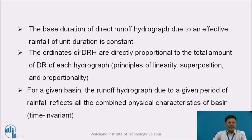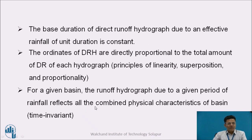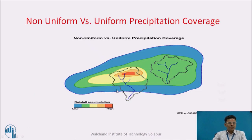The next assumption is that the base duration of the direct runoff hydrograph due to an effective rainfall of unit duration is constant. The ordinates of the direct runoff hydrograph are directly proportional to the total amount of direct runoff — here we are applying the principles of linearity, superposition, and proportionality so that computations can be easy. For a given basin, the runoff hydrograph due to a given period of rainfall reflects the combined physical characteristics of the basin, which are time-invariant. This picture shows that though we assume precipitation is uniform over the basin, in reality it varies, so some spatial averaging is needed.